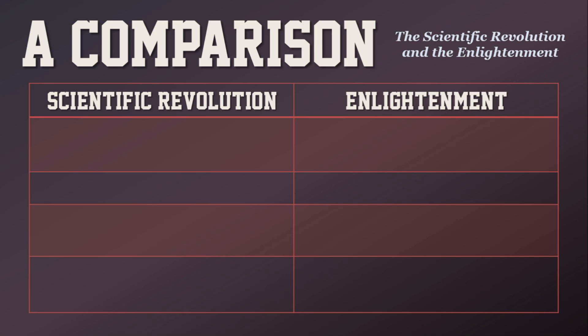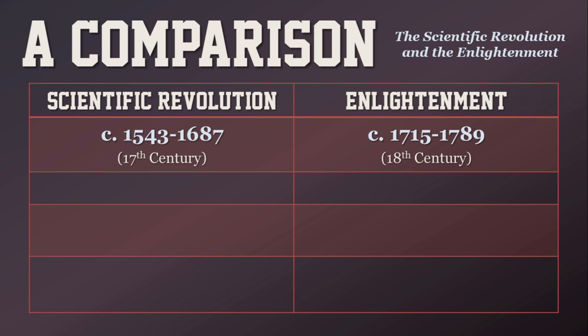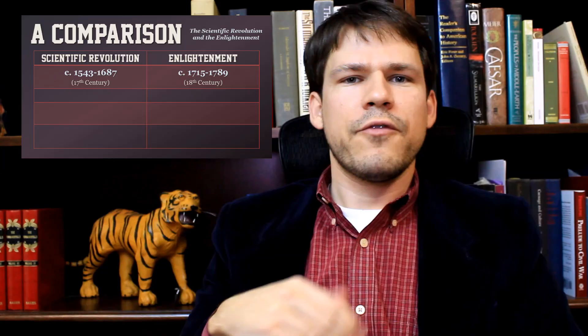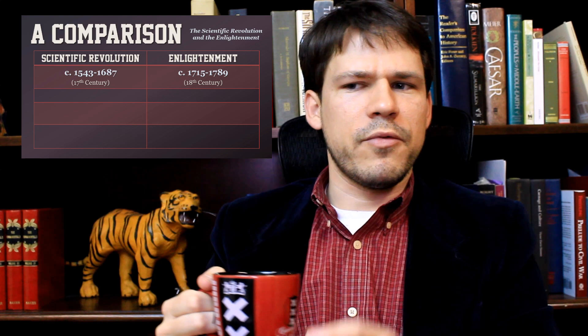First of all, the timeframe: the scientific revolution went from about 1543, when Copernicus posthumously published his work on heliocentrism, to 1687, the publication of Newton's work. So it's about a 17th-century phenomenon. Whereas the Enlightenment is more focused on the 18th century — roughly 1715 to 1789, the start of the French Revolution.